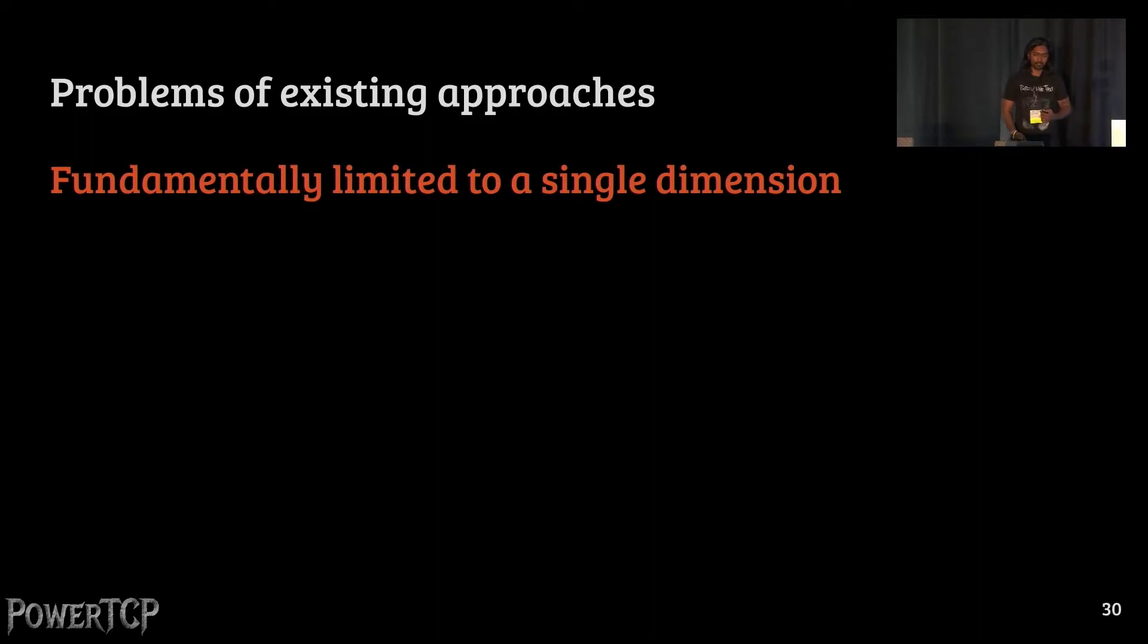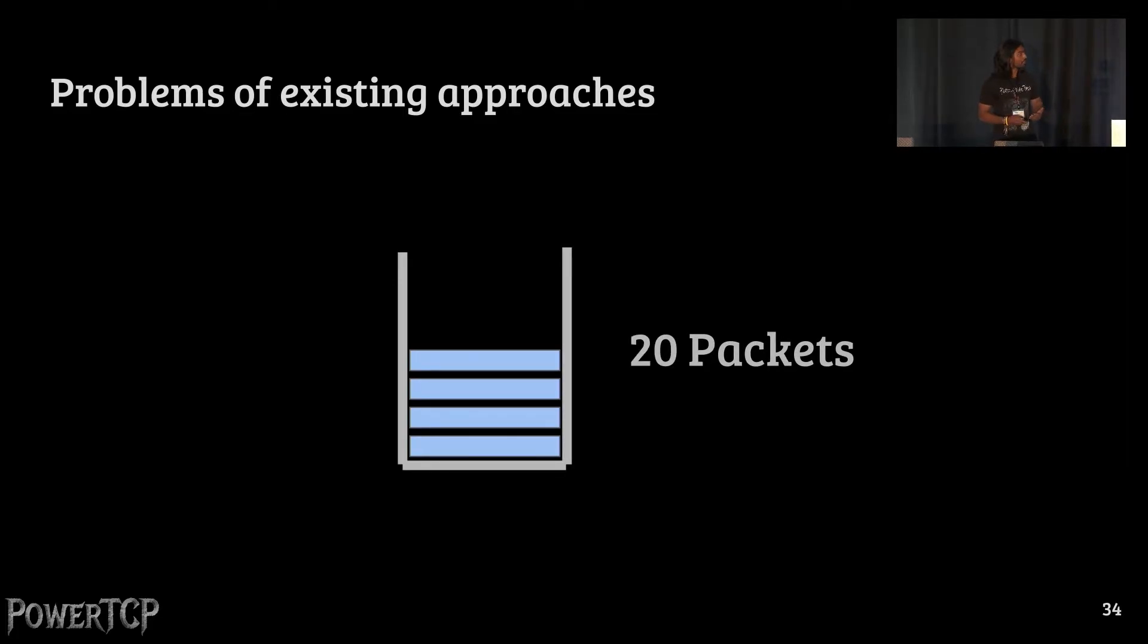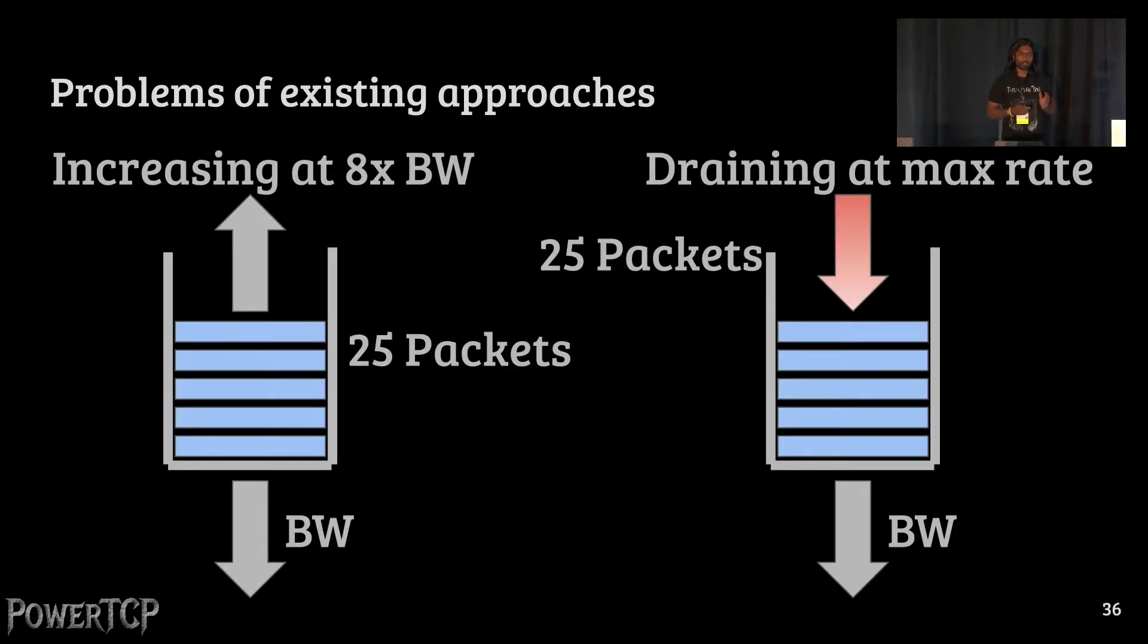We should go through an example. Consider a bottleneck queue, which is currently at just five packet queue length. It is increasing in queue length now with 10 packets, 15, 20. At this point, there are 25 packets in the queue. And consider that the queue is increasing at a rate of eight times the bandwidth. In a very similar situation with another queue, with the same queue length, but which is draining at maximum rate. Between these two situations, the class of algorithms, what we call as voltage-based, fundamentally cannot distinguish between the two situations because they only look at queue length or the round-trip times, which are exactly the same in these two situations. On the other hand, current-based algorithms can indeed distinguish between the two scenarios because they look at the gradient.